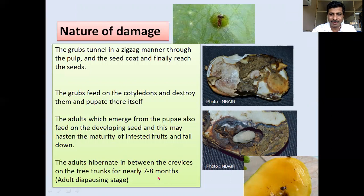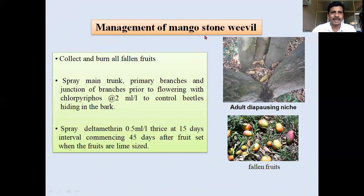The adult hibernates in cracks and crevices in the tree trunk for about seven to eight months — this adult diapause is important to remember. It is a monophagous pest and will not attack any other fruit or crop. For management: collect and burn all fallen fruits. Spray the trunk and primary branches prior to flowering with chloropyrifos at 2 ml per liter to control beetles hiding in the bark. Spray deltamethrin when fruits are lime-sized, at 0.5 ml per liter, thrice at 15-day intervals commencing 45 days after fruit set.